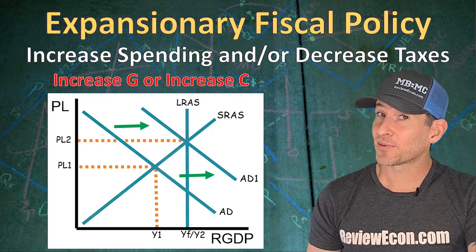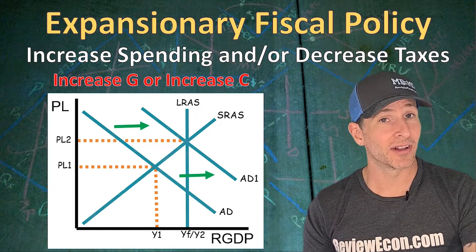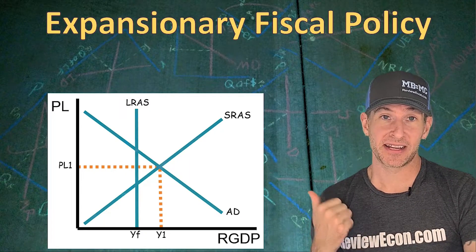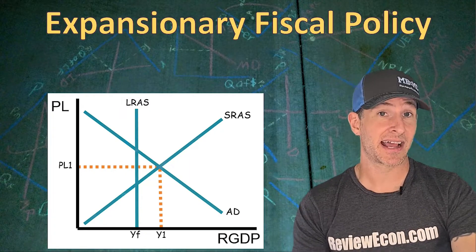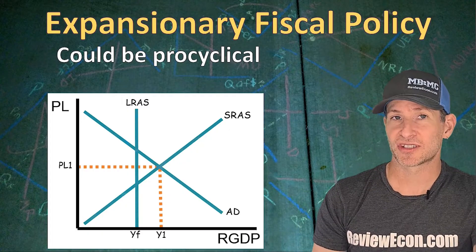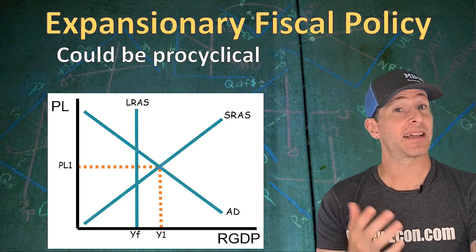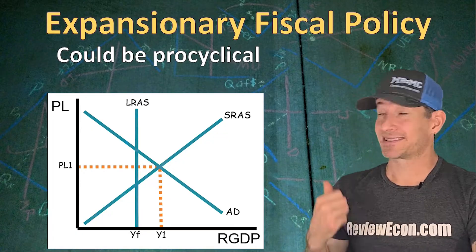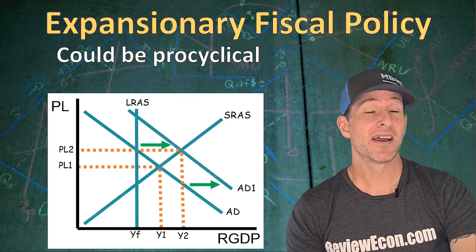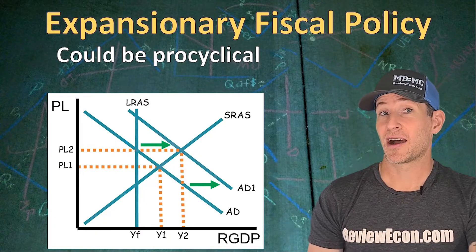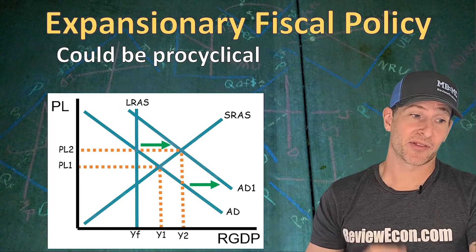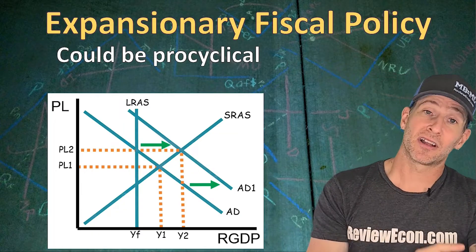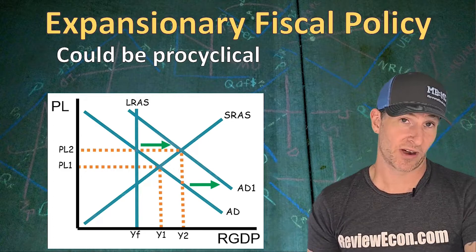Now we have a higher price level and a higher level of output. If instead of a recessionary gap we had an inflationary gap, and the government decreases taxes or increases spending, that action would be pro-cyclical — meaning the government's action is actually making the inflationary gap bigger. It would still shift the aggregate demand curve to the right, further increasing output to Y2, with the price level at PL2, but our gap between current output and long-run potential would be wider than before.